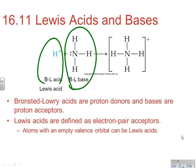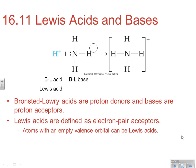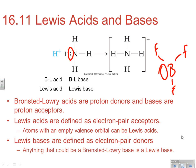Lewis acids are defined as electron pair acceptors, and Lewis bases as electron pair donors. H⁺ accepts an electron pair, so H⁺ is acting like a Lewis acid. Atoms with empty valence orbitals can be Lewis acids — watch out for boron compounds on the test, since boron is stable with less than a full octet and can accept an electron pair, making it a very common Lewis acid. Lewis bases are the things that donate the electron pair; anything that could be a Bronsted-Lowry base is going to be a Lewis base.